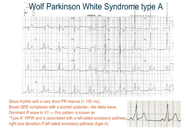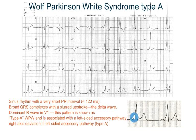Wolf-Parkinson-White syndrome is a condition in which there is an extra electrical pathway in the heart. It is of two types: type A, when the extra pathway is on the left side, and type B, when it is on the right side. The ECG criteria is that the rhythm will be sinus, the PR interval will be very short — less than 120 milliseconds or less than three small boxes — the QRS complexes will be broad with a slurred upstroke called the delta wave.